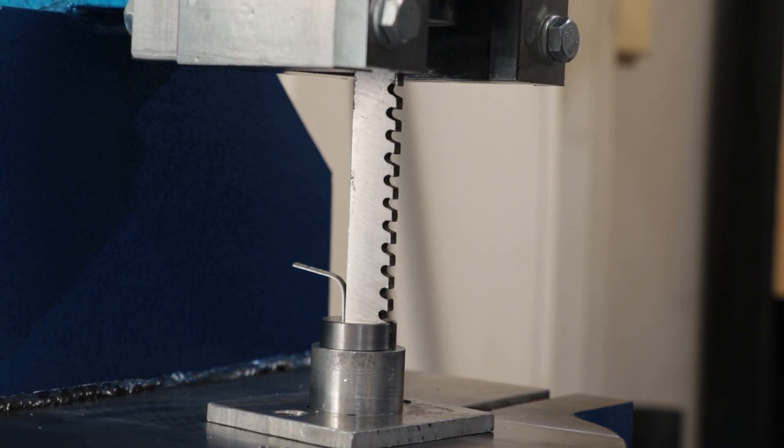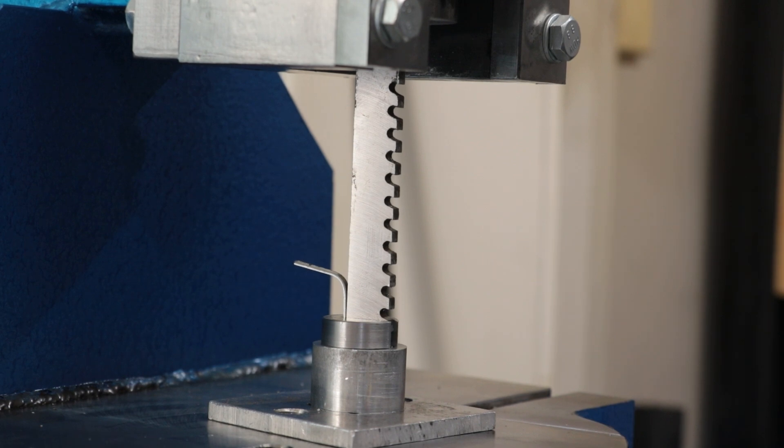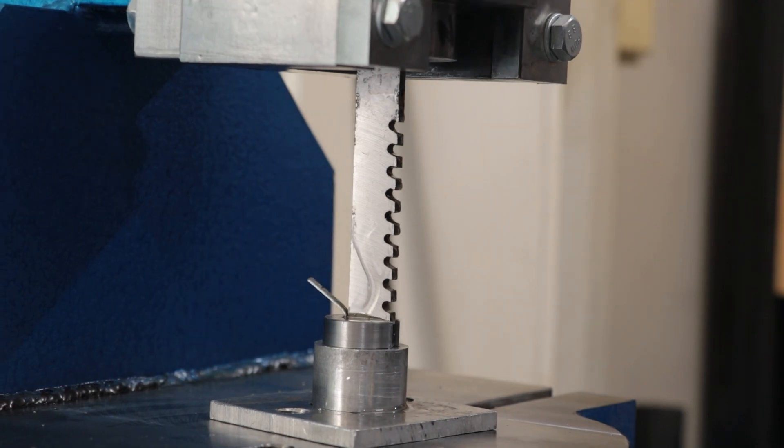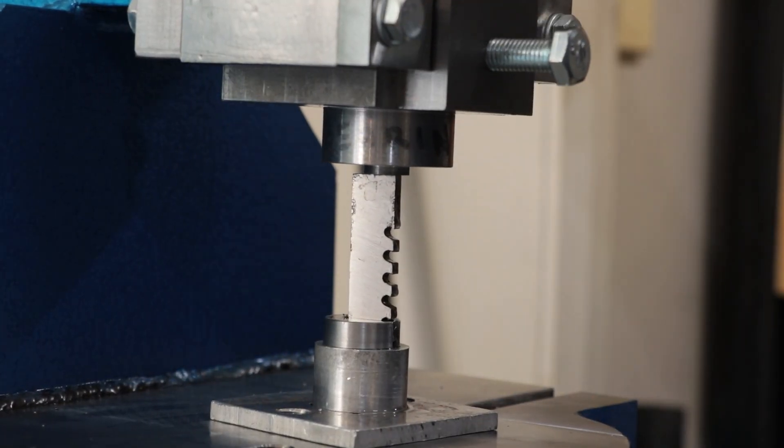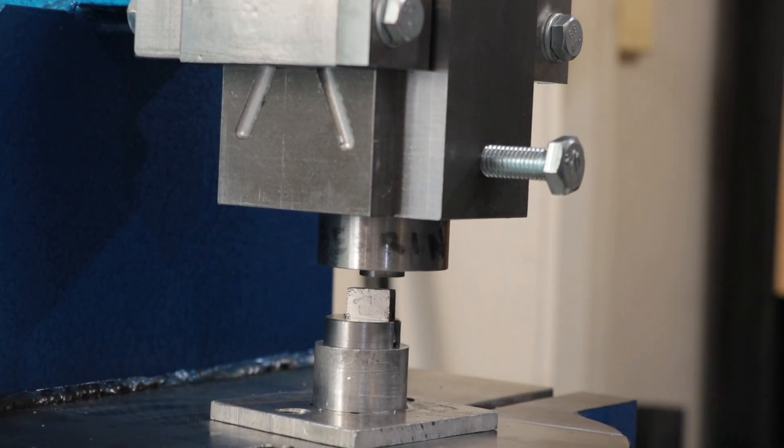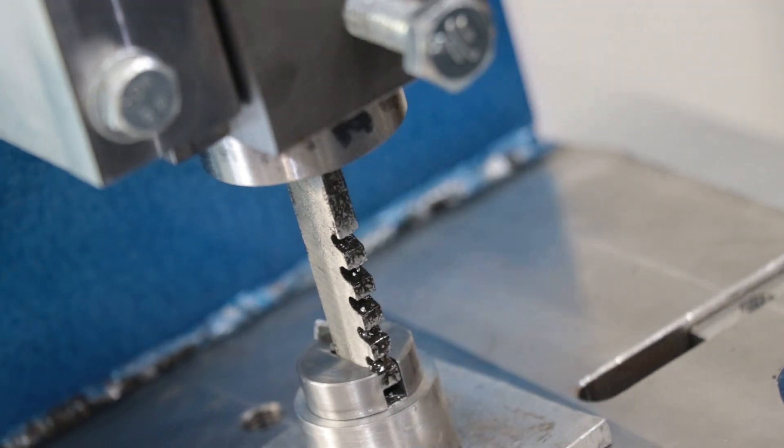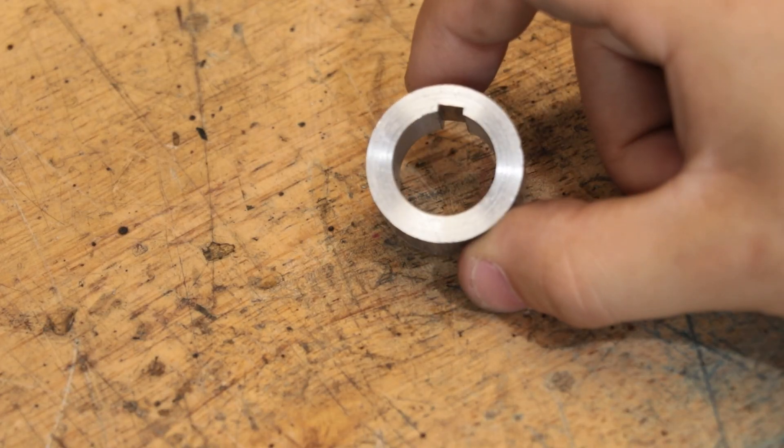Now the first pass doesn't take it to its full depth, so I'll add a shim to the back for pass number two. And it's safe to say that my choice of shim stock could have been a little bit better. And I might as well do it one more time to make sure that everything is fully cut.